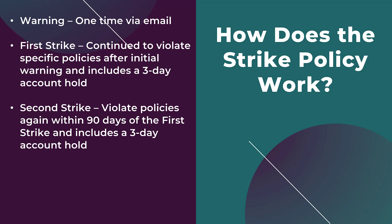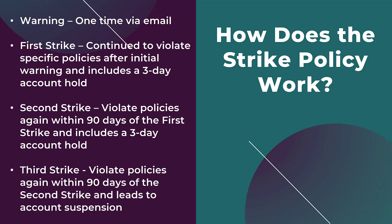For a second strike, your account will once again be put on hold, but this time it's going to be for seven days instead of three. Just like the first strike, if you don't fix your policy violations within the seven days, your account will continue to be on hold. You'll be able to access the account to view any historical information, but you cannot run any ads. And if you continue to violate policies, you're going to be hit with a third strike.